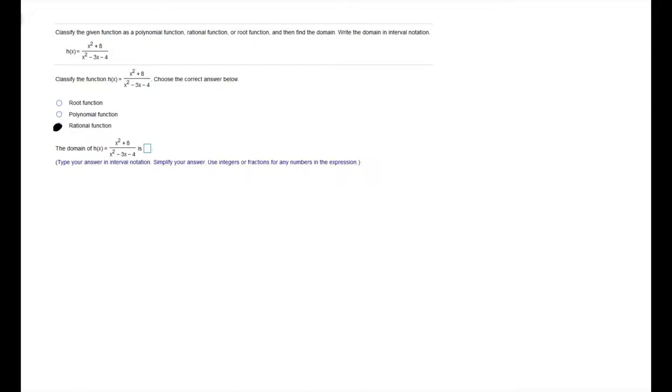And then we want to find the domain of this rational function. So with rational functions, because they have variables in the denominator, we're concerned with the denominator equaling zero. If you have the denominator of a fraction equaling zero, this is something that is undefined. So our strategy for finding the domain is to set the denominator equal to zero. So we're going to take that denominator of x squared minus 3x minus 4, we're going to set that equal to zero.